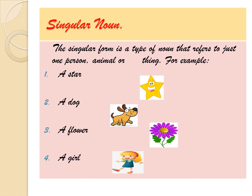Again, I will repeat the examples for you: a star, a dog, a flower, a girl. Now we will study another type of noun — that is the plural noun.